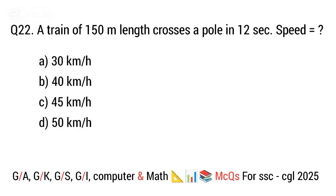Question 22. A train of 150 metres length crosses a pole in 12 seconds. Speed is equal to? The right answer is option C. 45 kilometres per hour.